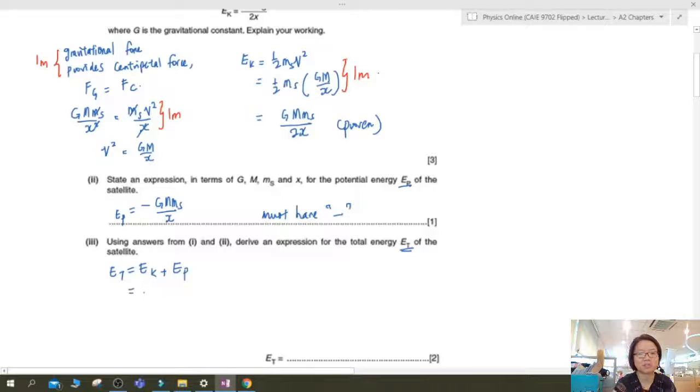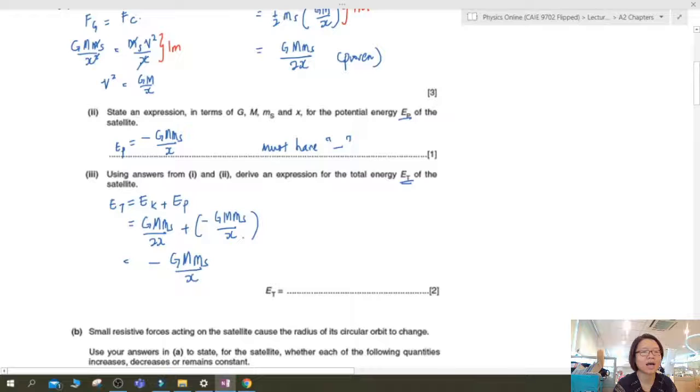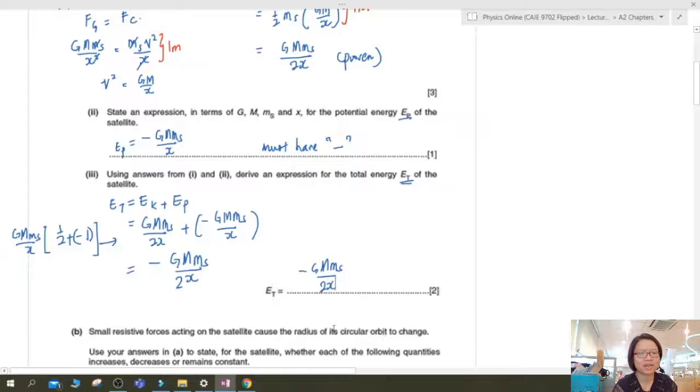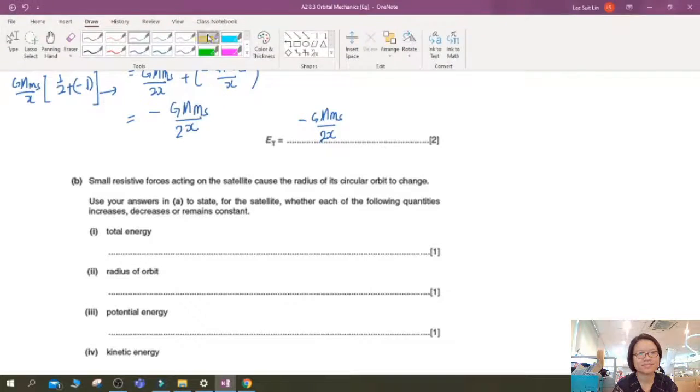So last part, derive an expression for total energy. So you just add the two expressions, GMms over 2x plus negative GMms over x. You can do it slowly, but I already know this is half plus negative 1, which is negative half. So I'll factorize at the side for you to see in case you have confusion or you need a bit of algebraic help. So factorizing, thank you for coffee. Okay, so factorizing the terms, you will get half and negative 1. So as long as you show that you add and you get the correct term, you will get your two marks.